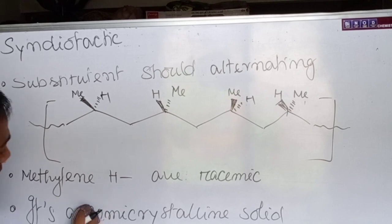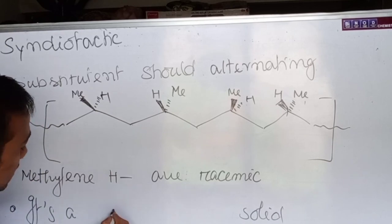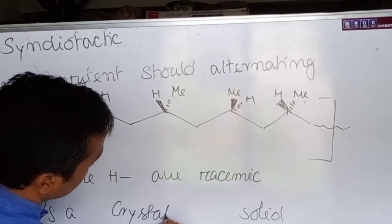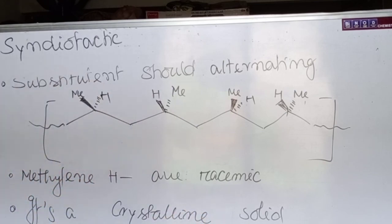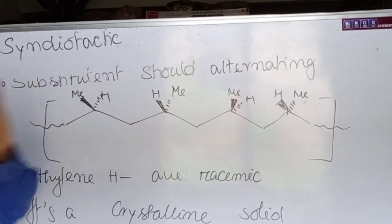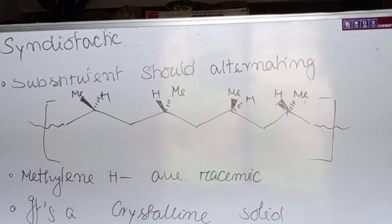For syndiotactic polymers, unlike the semi-crystalline isotactic type, this one is fully crystalline. To summarize: substituents are in an alternating pattern, methylene hydrogen is racemic, and it is crystalline in practice.